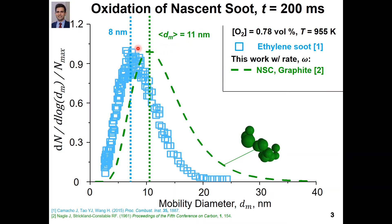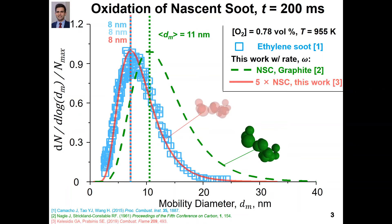This overestimation is due to the fact that nascent soot is more reactive compared to graphite and mature soot because it contains more hydrogen. In fact, we derived a nascent soot oxidation rate that is five times larger compared to that of graphite. This new nascent soot oxidation rate can be used to design new after-treatment technologies to clean up these small soot nanoparticles from our atmosphere. Thank you so much for watching, and I look forward to meeting you at EAC 2020.